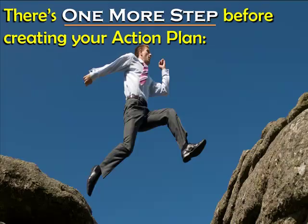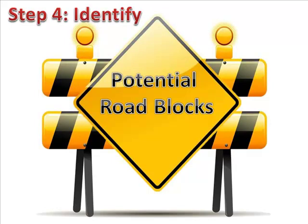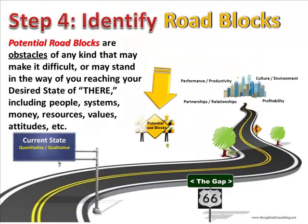There's still one more step before creating your action plan. Step 4: identify the potential roadblocks. The potential roadblocks are obstacles of any kind that may make it difficult or stand in the way of reaching your desired state of 'there.' That includes people, systems, money, resources, values, attitudes, and so forth. Before you can brainstorm the hows, it's important to know what could get in the way and then plan for it.